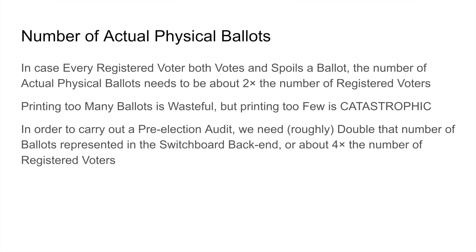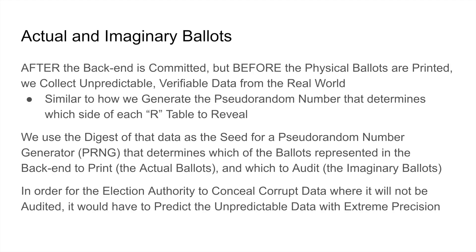In order to carry out a pre-election audit, we need roughly double that number of ballots represented in the switchboard back-end, or about four times the number of registered voters. After the back-end is committed, but before the physical ballots are printed, we collect unpredictable, verifiable data from the real world.